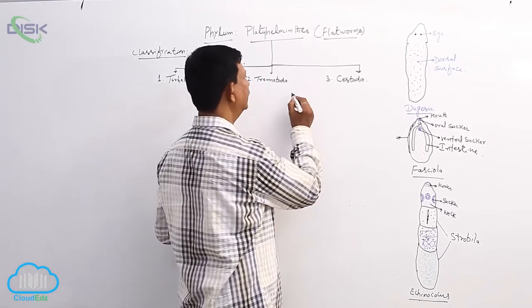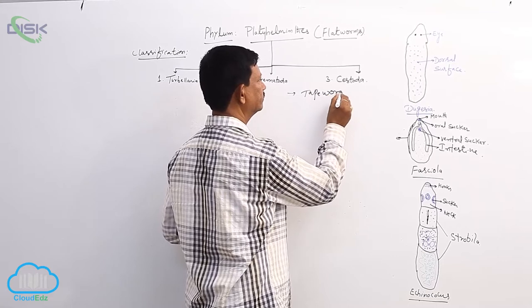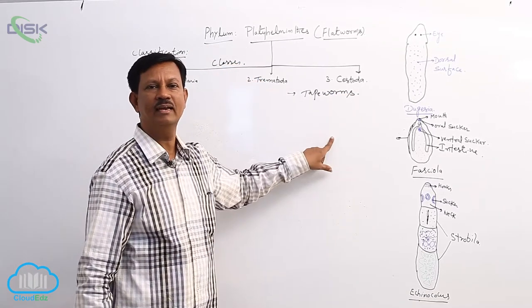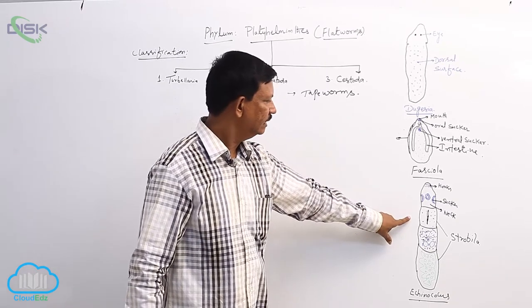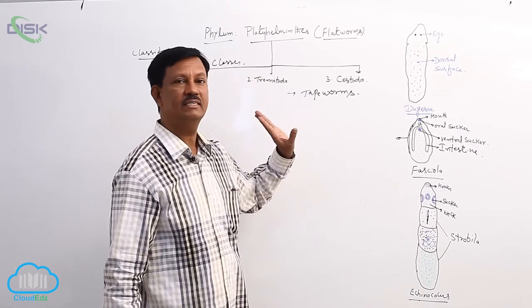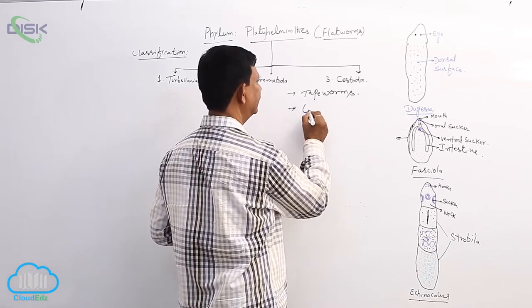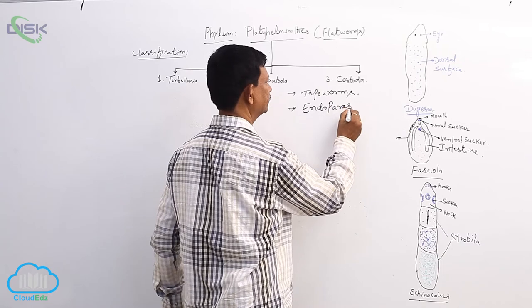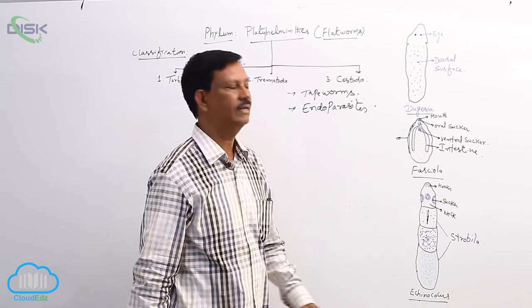Cestoda are commonly known as tapeworms because their body resembles a tape or ribbon. Examples include Echinococcus, the dwarf tapeworm, and the longest tapeworm, Taenia saginata. They are endoparasites, with most organisms present inside the alimentary canal of the host.